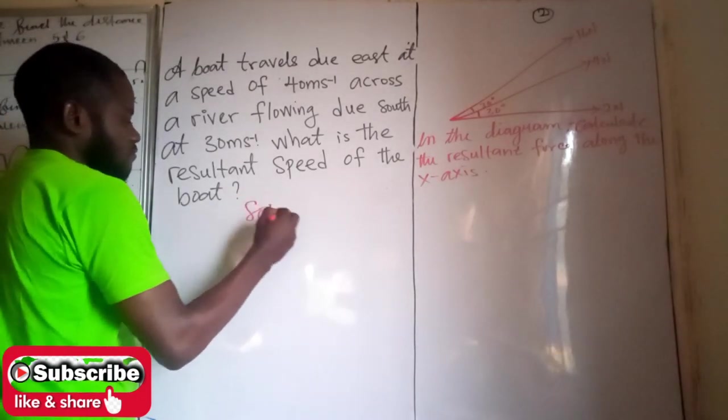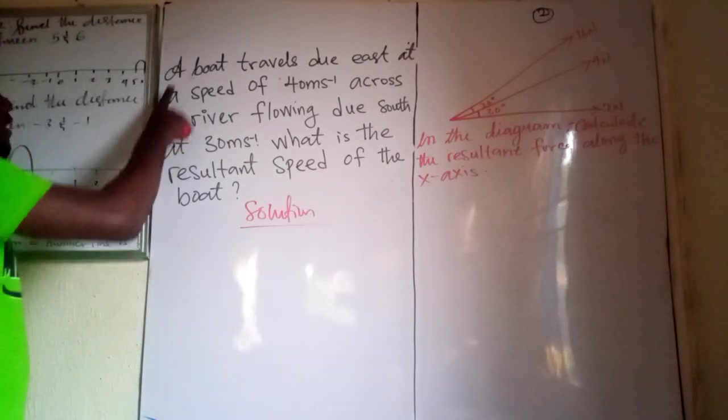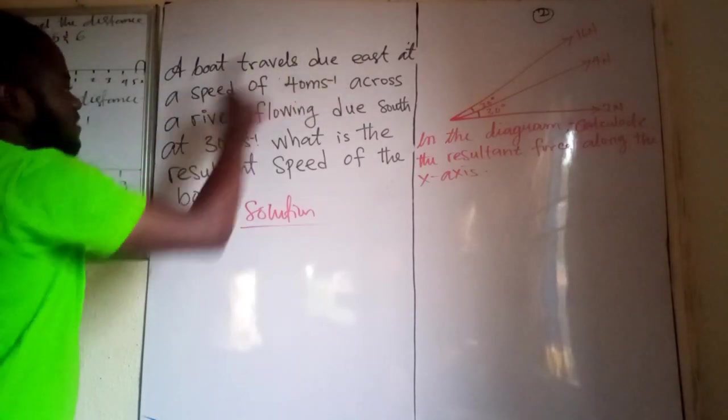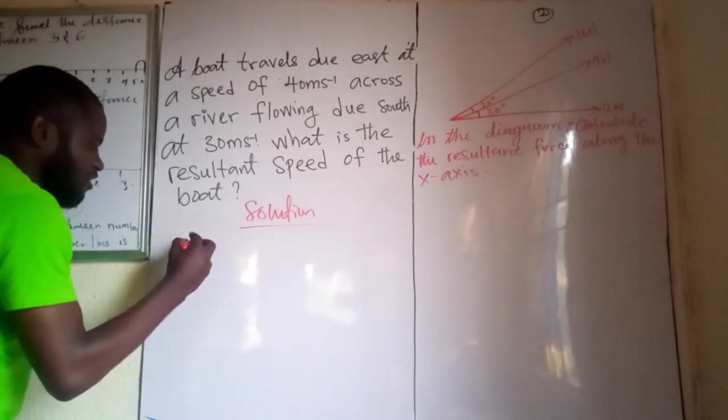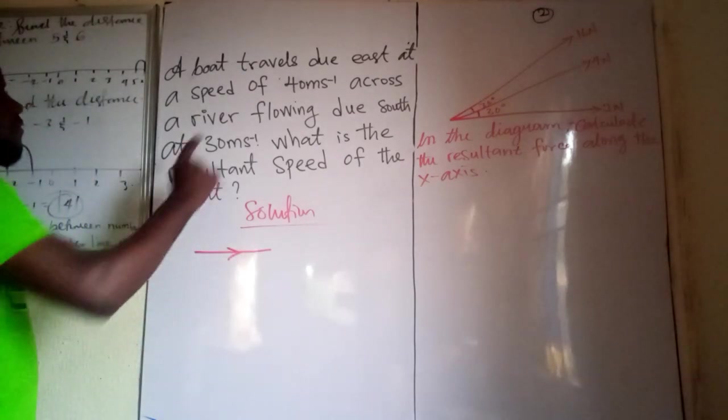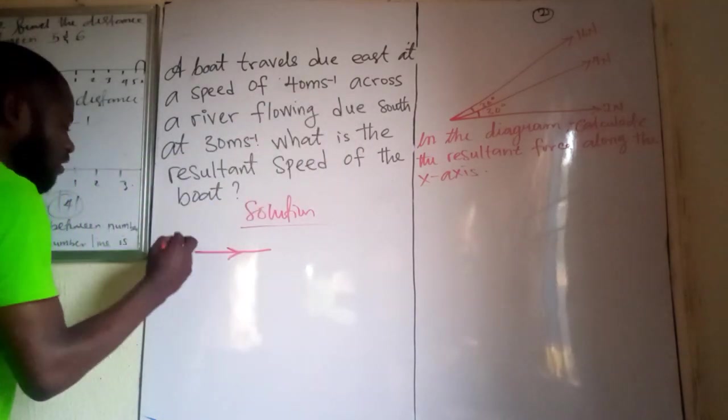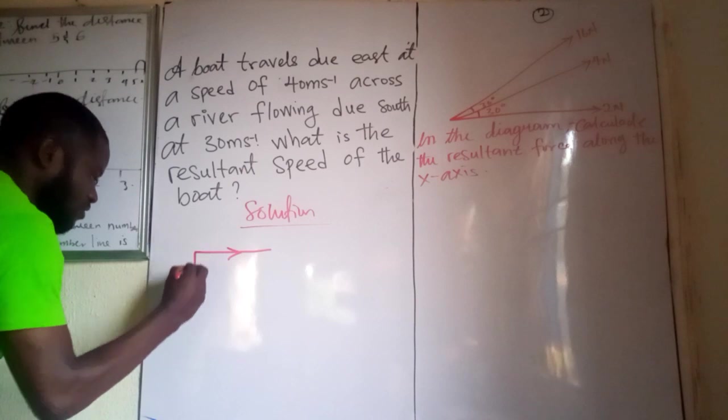Solution. Now, a boat travels due east. So this is the direction of east. So the boat is traveling in this direction across a river flowing due south. The direction of the river is due south like this.